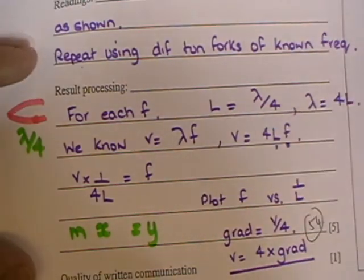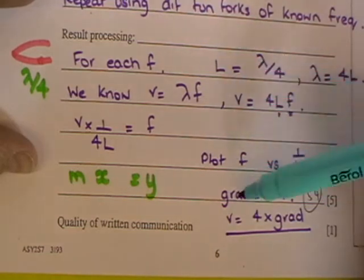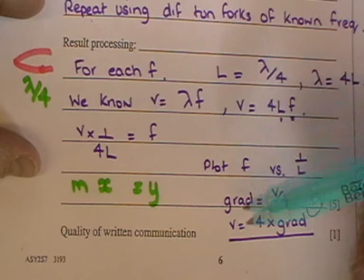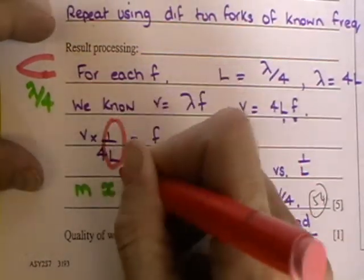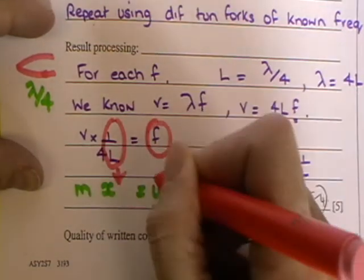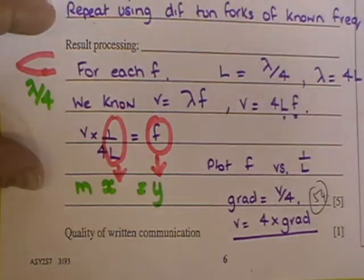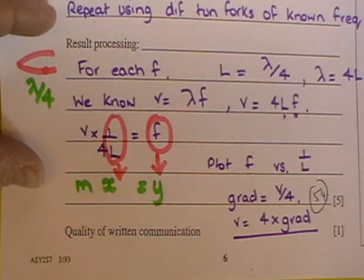Now it says quality of written communication down here. You have to really show kind of equations here to prove that. So what I'm suggesting that you plot here is that you plot that on the X axis, that on the Y axis, and then your V over 4 left. And that's going to be the gradient of your graph. And you have to rearrange that then to multiply by four to get the speed of sound.